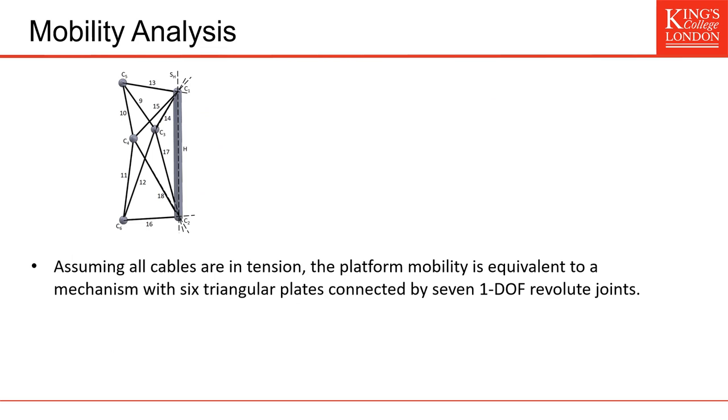So we will now show that this platform has indeed one degree of freedom by performing its mobility analysis. If you assume that all the cables are in tension, the platform mobility is equivalent to a mechanism with six triangular plates connected by seven one-DOF revolute joints. So we are interested in the mobility between C3 and C4 where we put our thumb and index, and indeed if you assume the cables are in tension, you can see that a virtual triangular plate is formed. So if we put all them together, we have six plates and seven one-DOF virtual joints.